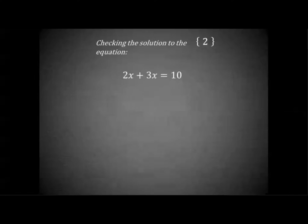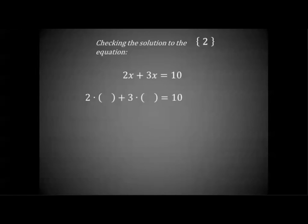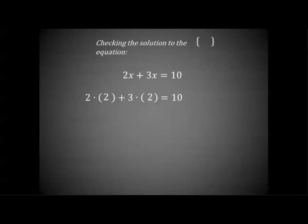We need to check our solution to the equation 2x plus 3x equals 10. We think that the solution value is 2. To show whether it is a solution or not, we need to replace x in the original equation by the value 2. If this is a true statement, then we have a solution value.